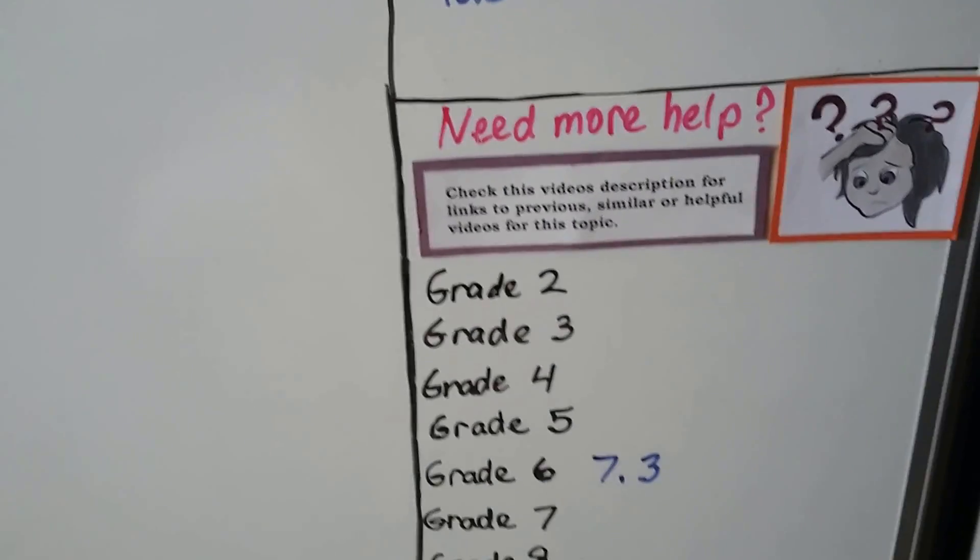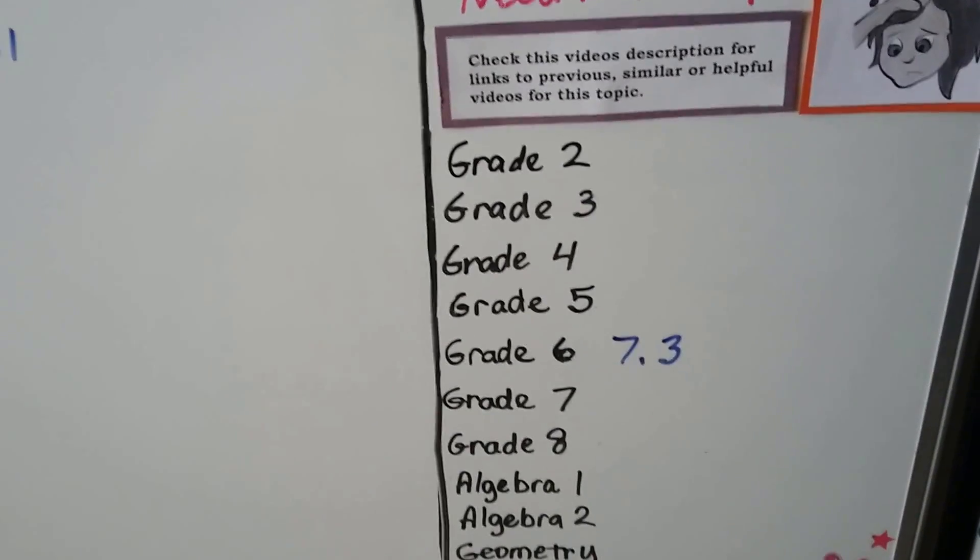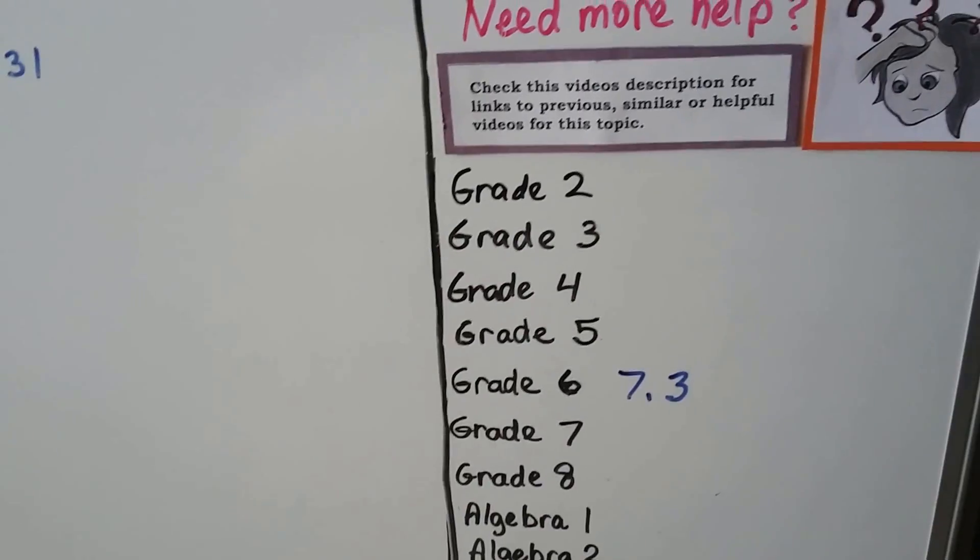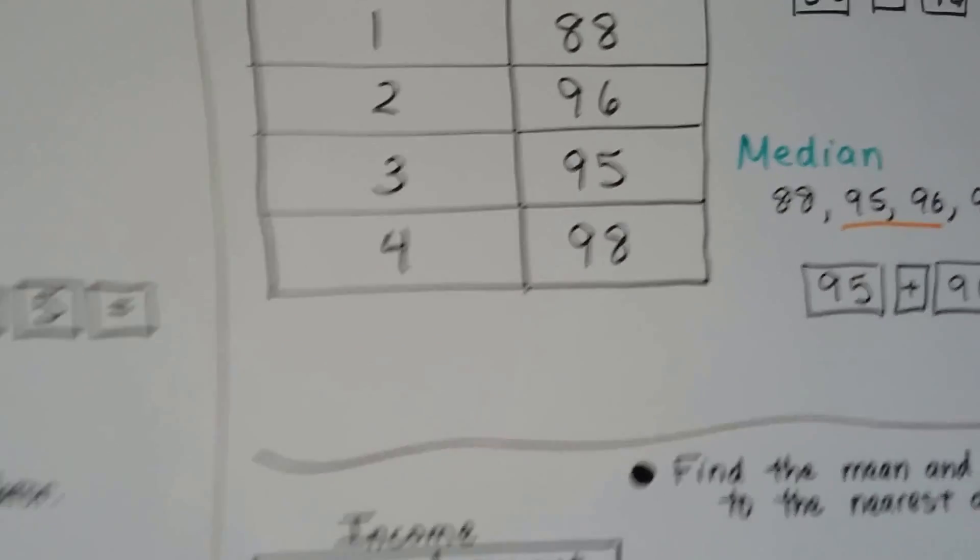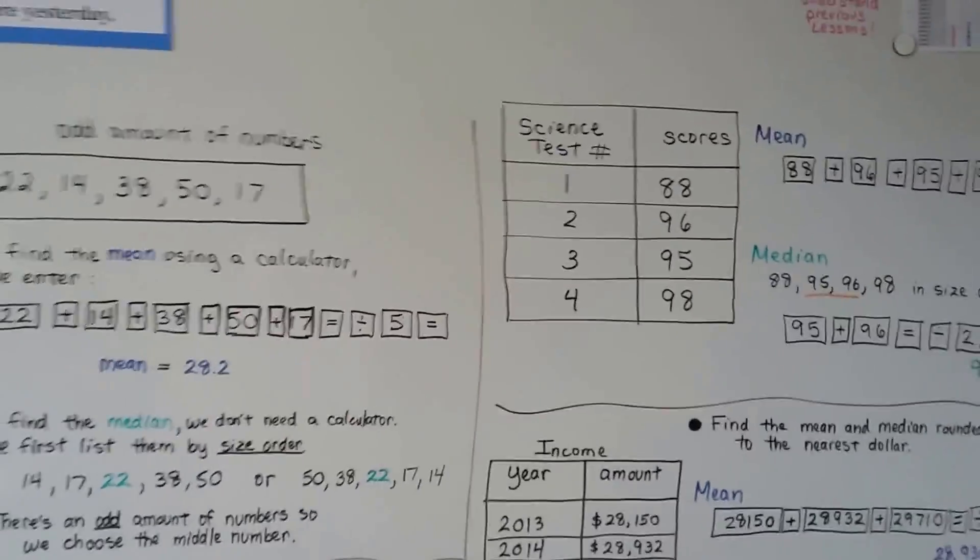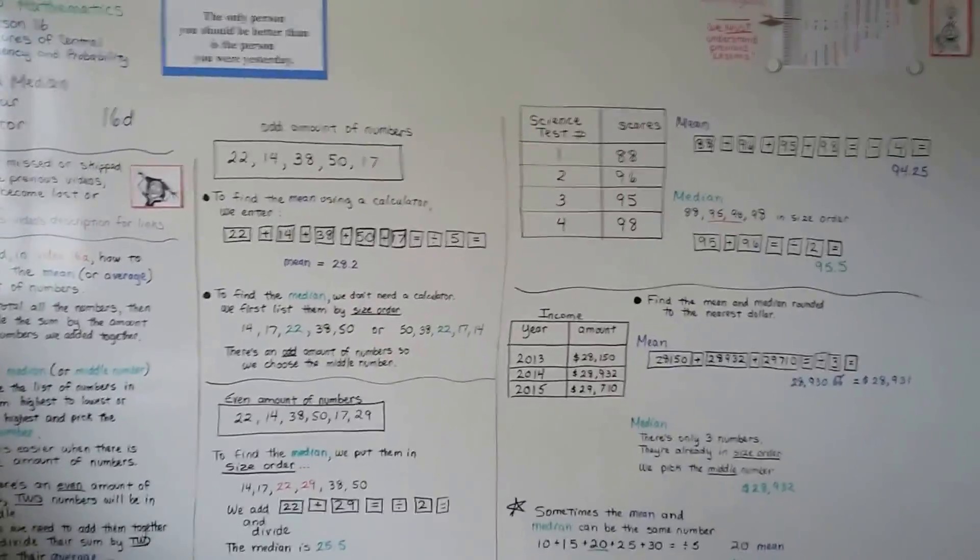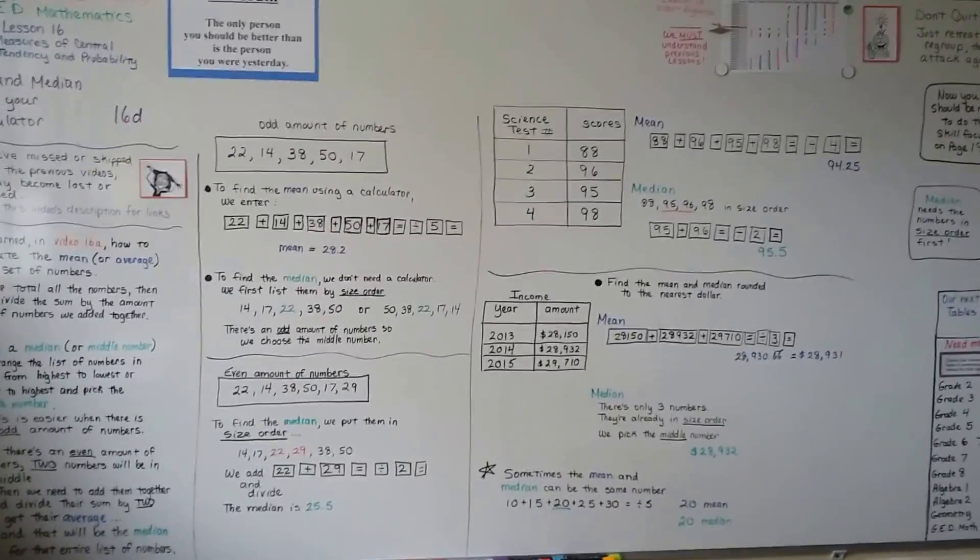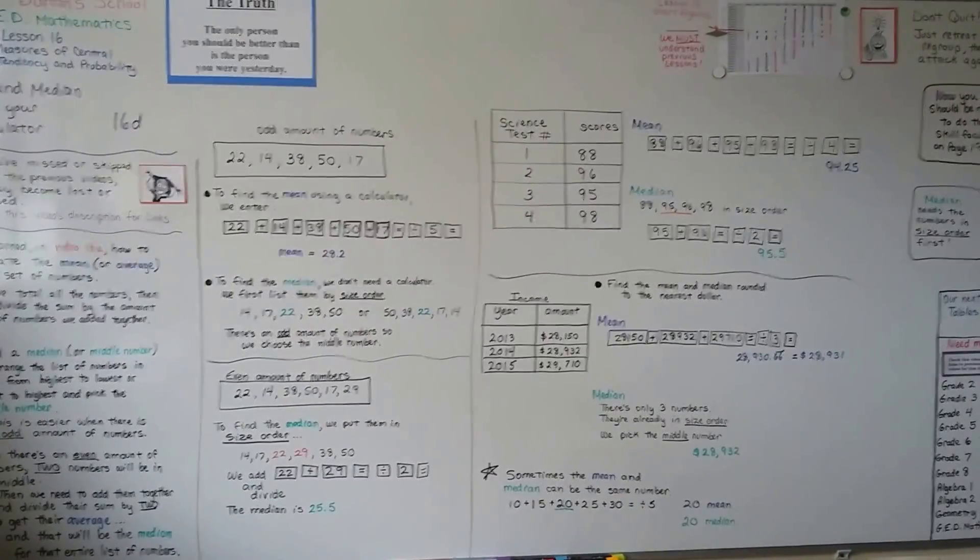Our next video is tables and charts. It's lesson 17A. It's going to be a link to 7.3 from 6th grade where it talked about mean, median, and mode, and all that. And I'm going to have those three previous videos for this lesson linked in this description. So we're going to move on and start talking about tables and charts. There's going to be a lot of them on the GED math test. You want to make sure you know how to read them correctly. So I'll see you there. I hope you're doing okay. And until next time. Bye.